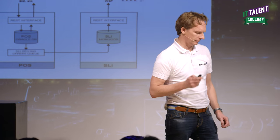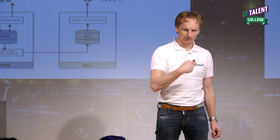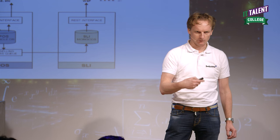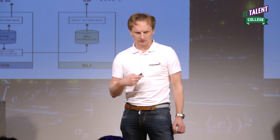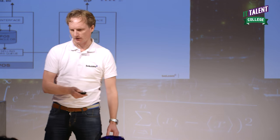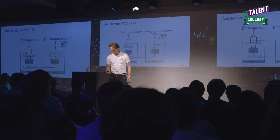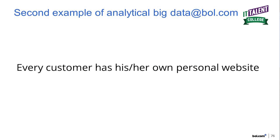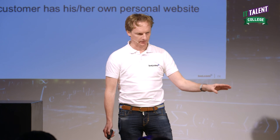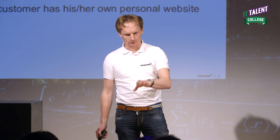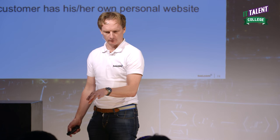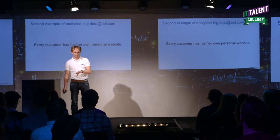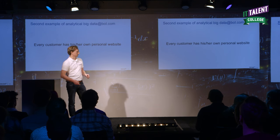And you can actually see it from the stats on our website — after we introduced it, it was much faster. It's a difference of milliseconds, which is huge if you look at web shop performance. Second analytical big data example: we saw search suggestions, we saw the pricing solution from an operational point of view, and now we are looking into personalization.